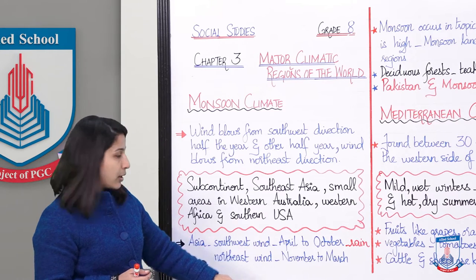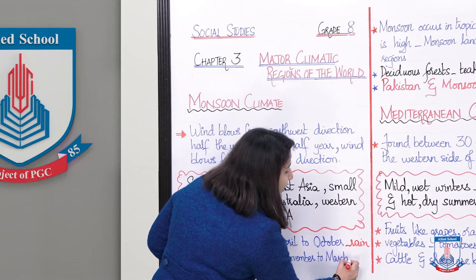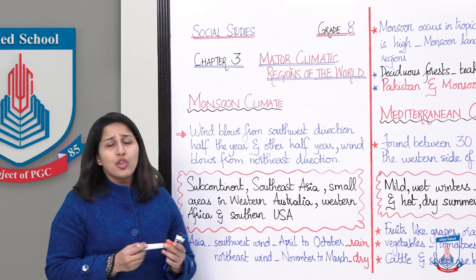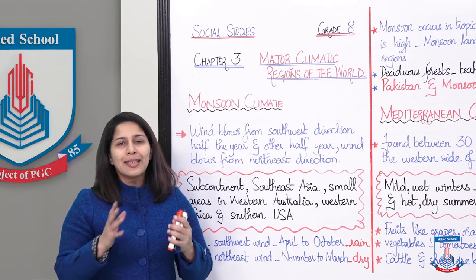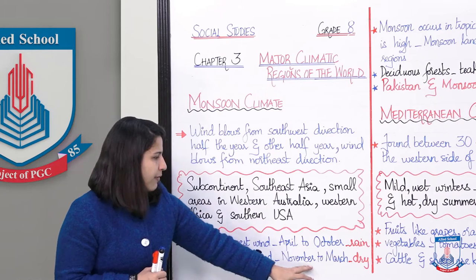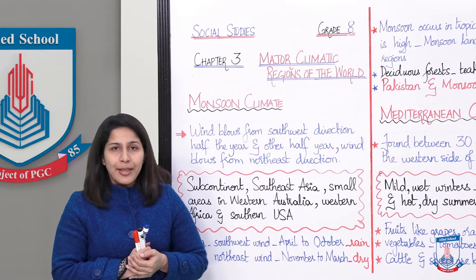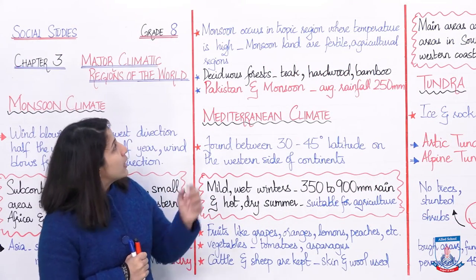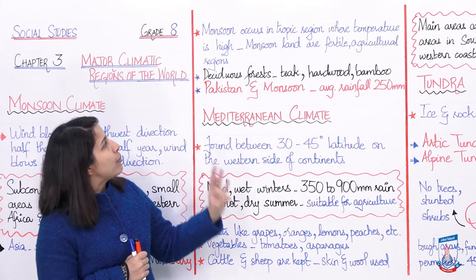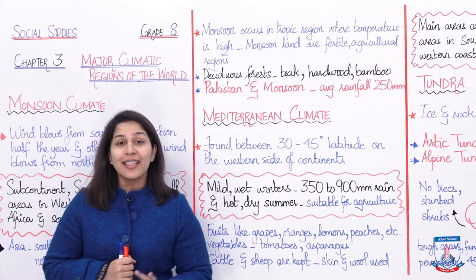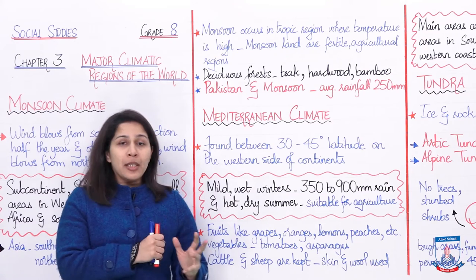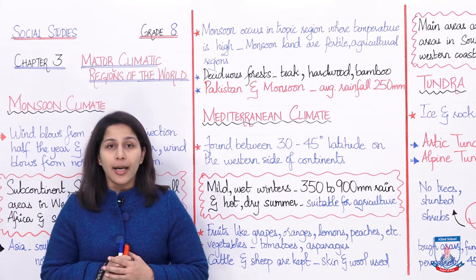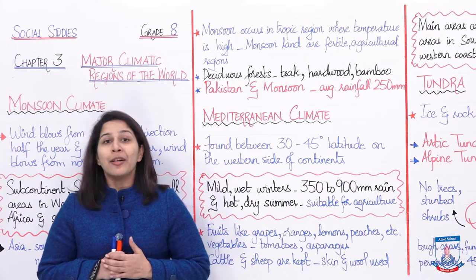The other half of the year, November to March, northeast direction se wind blow kerti hai aur yeh wind usually dry aur cool hoti hai — that's because Asia experiences winters in those months. Monsoon basically occurs in tropical regions where temperature is high, and monsoon lands are fertile agricultural regions. Tropic regions mein temperature is high — garmi zyada hoti hai.